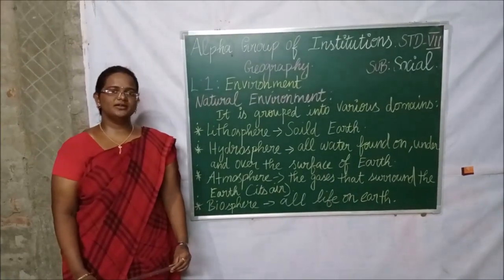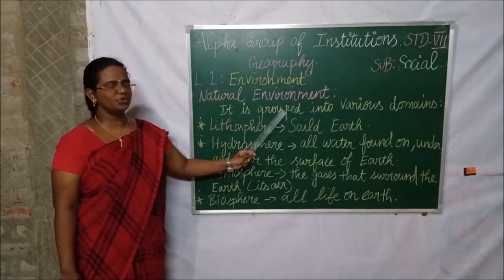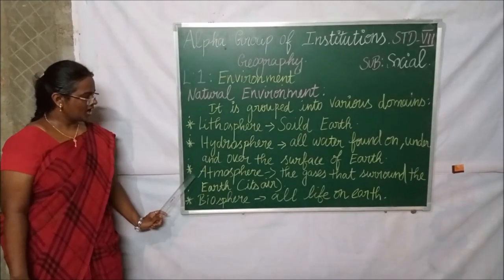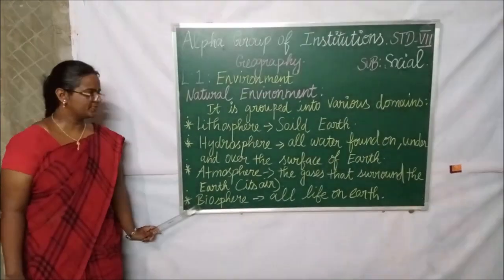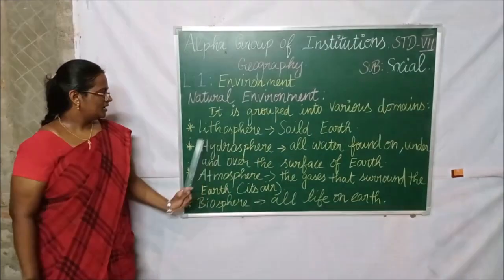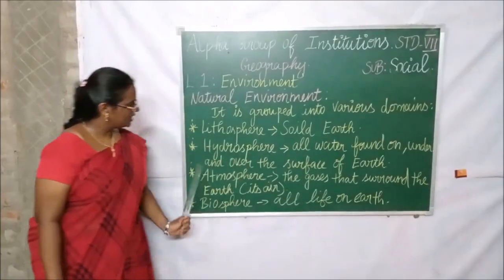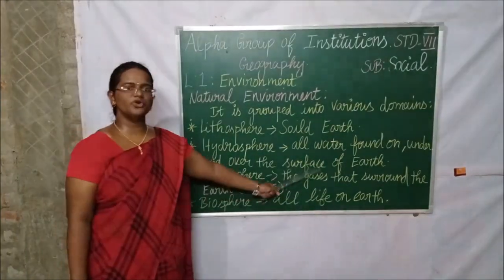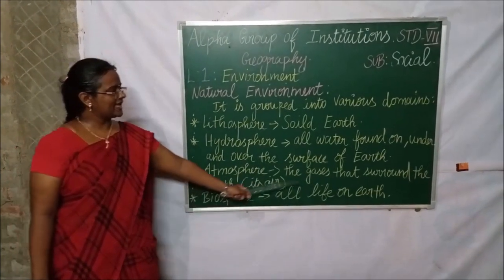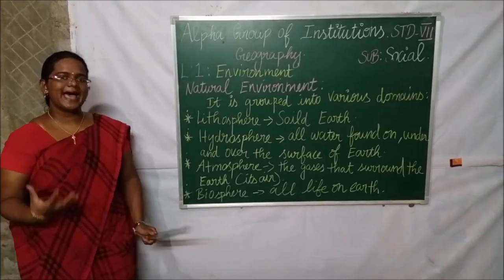We have already learned about natural environment. It is grouped into various domains like lithosphere, hydrosphere, atmosphere, and biosphere. Lithosphere means solid earth. Hydrosphere means all water found on, under, and over the surface of earth. Atmosphere means the gases that surround the earth, its air.